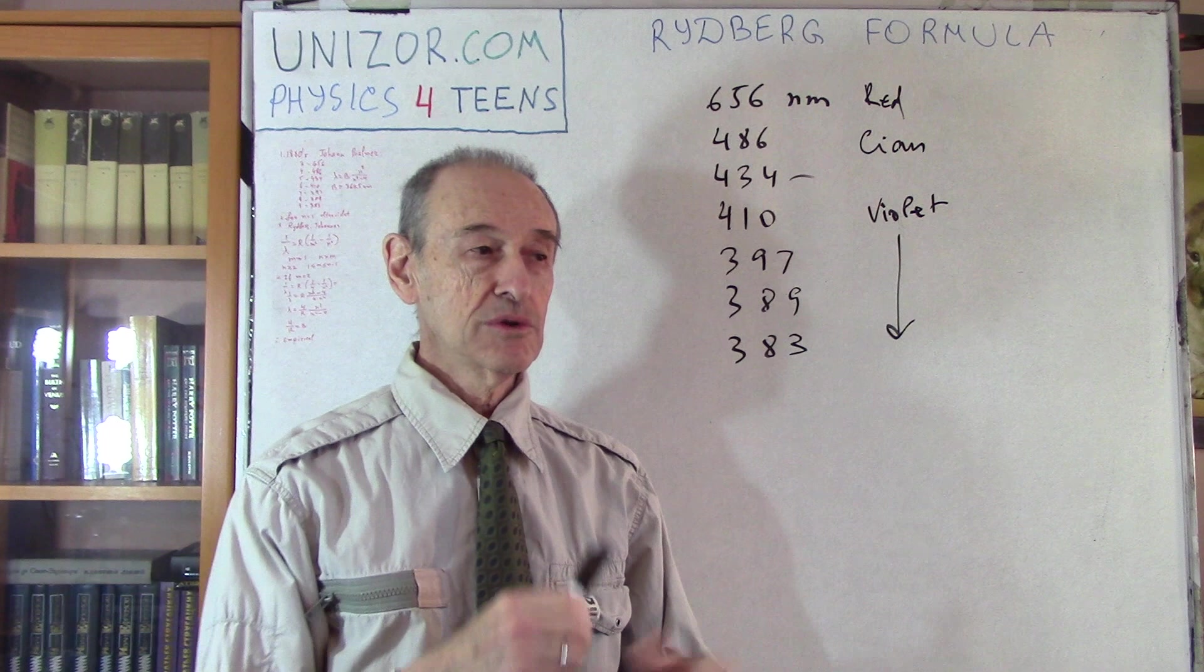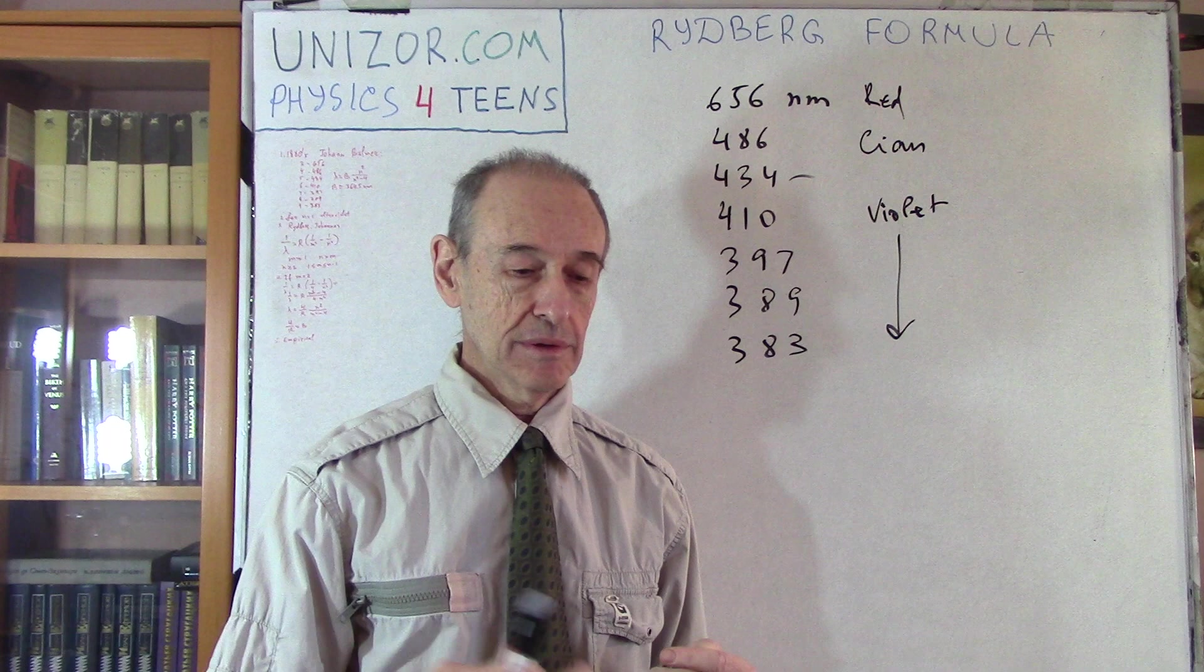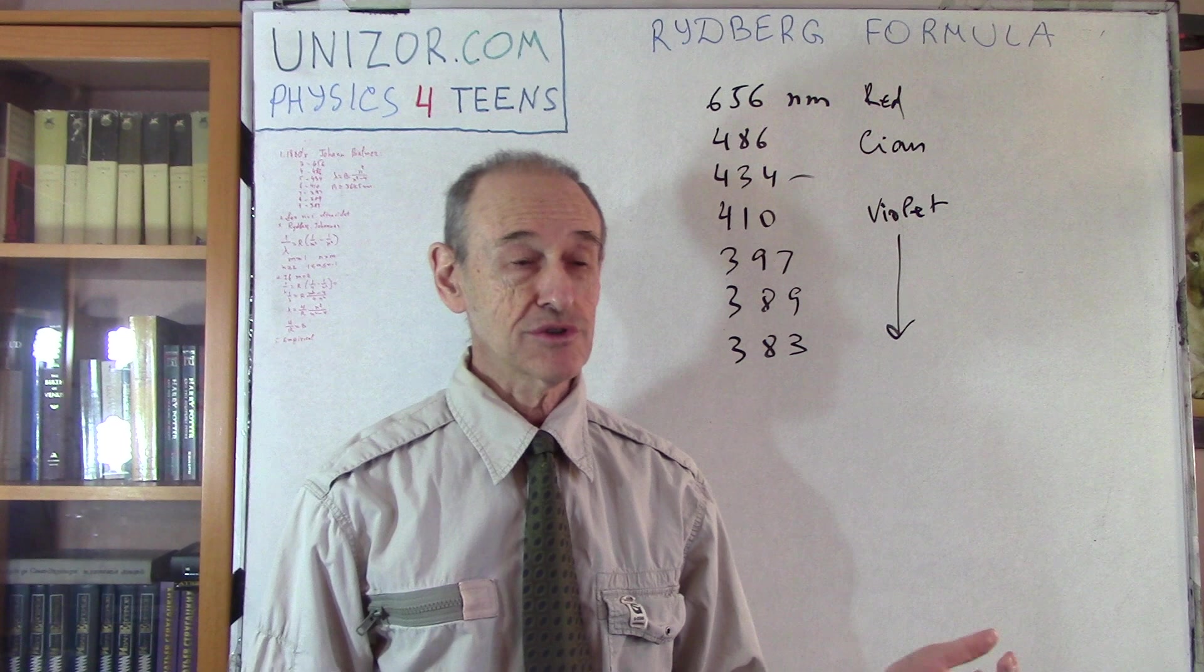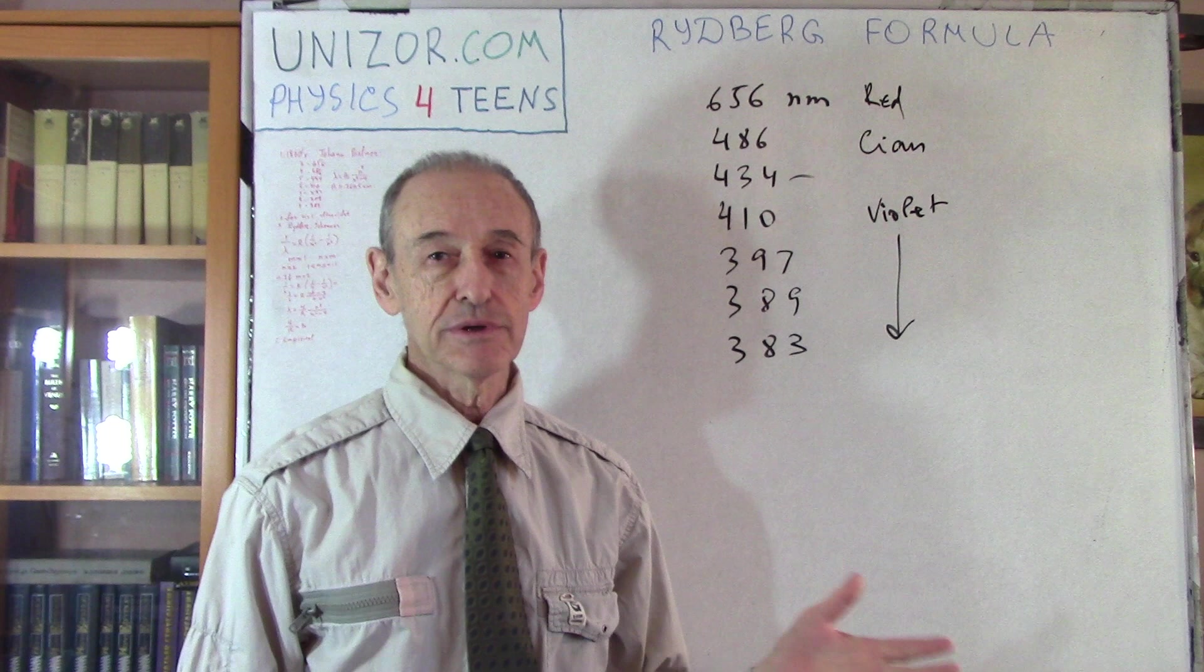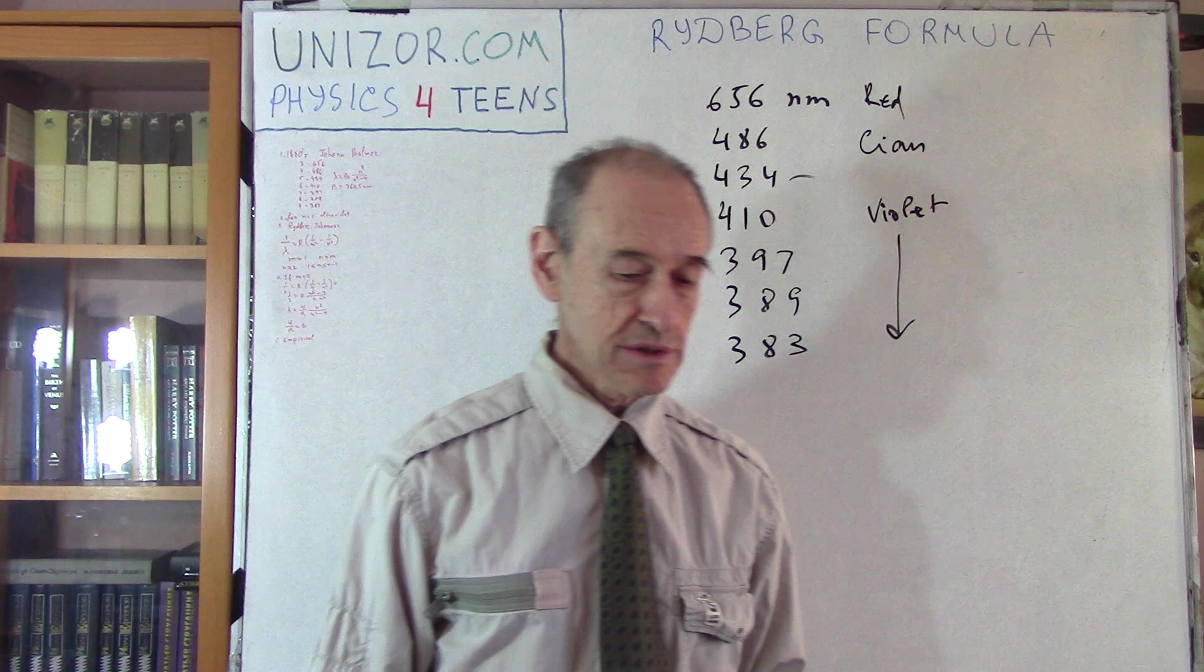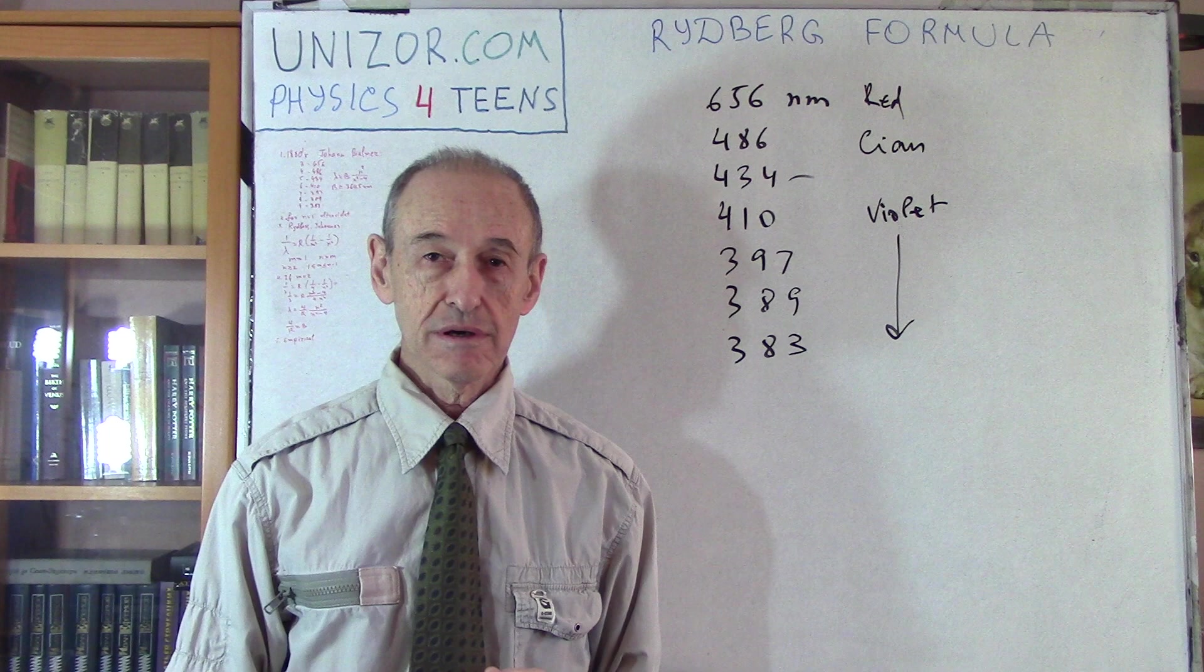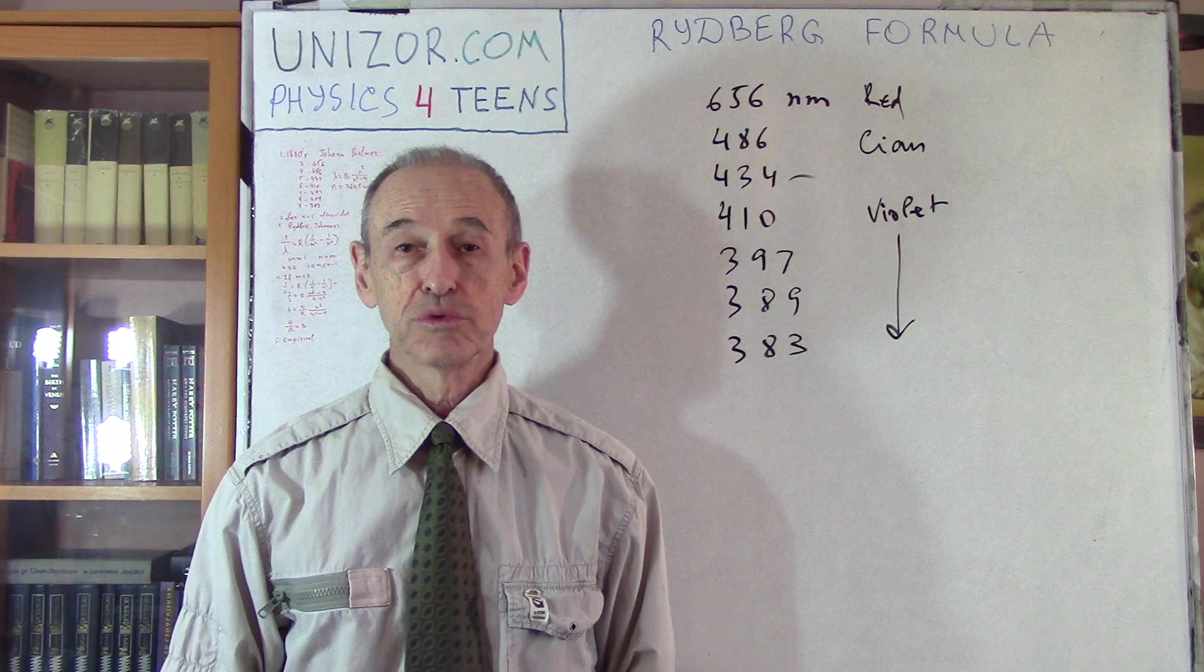They did not really know about planetary model of atom and electrons jumping from one orbit to another, emitting certain amount of energy as electromagnetic oscillations, light. At that time, they did not really know. But they had to build the theory. What's the first thing which comes up is to have some kind of a formula which basically combines these numbers together. And then, if there is such a formula, to be able to maybe explain why is such and such.